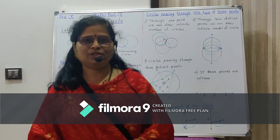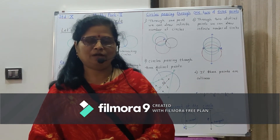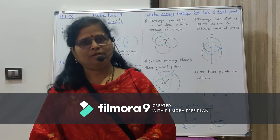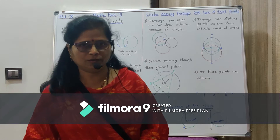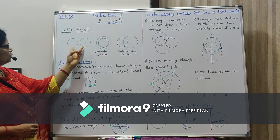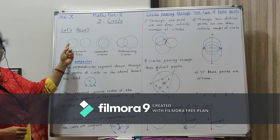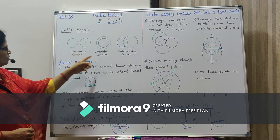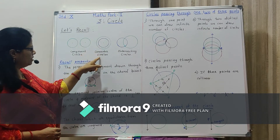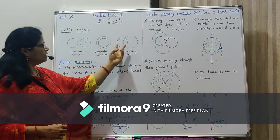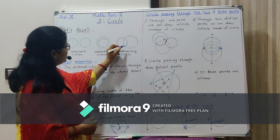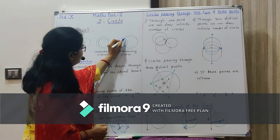Namaskar. In this video on circles, we will revise what we have learned. We can draw a circle using a given radius. Congruent circles are two circles whose radii are the same. Concentric circles are circles having the same center. And intersecting circles are two circles that intersect at two points.